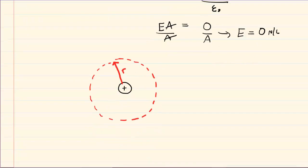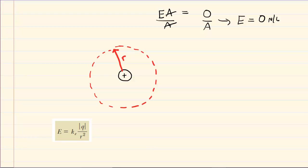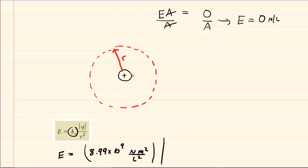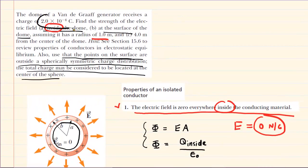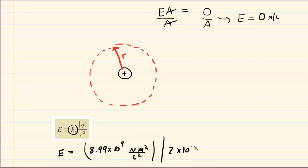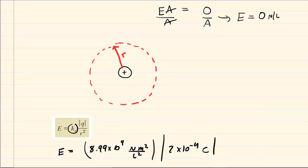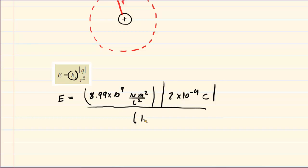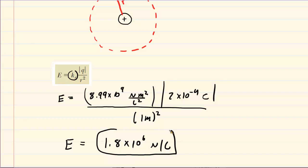To calculate the electric field produced by what is essentially a point charge — since we're assuming all the charge is accumulated at the center — we use the point charge electric field equation. We take the Coulomb constant, 8.99 times 10 to the power of 9 Newton meters squared per Coulomb squared, multiply by the charge magnitude of 2 times 10 to the negative 4 Coulombs, and divide by the distance squared, which is 1 meter squared. The result is an electric field of about 1.8 times 10 to the power of 6 Newtons per Coulomb — the correct answer to part B.